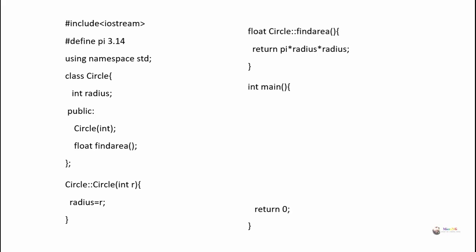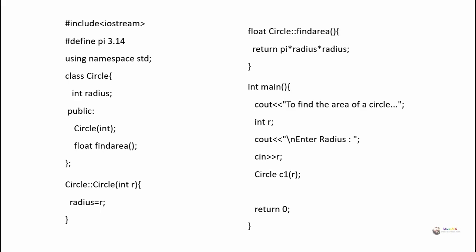In the main method we accept the value of radius from the user into variable r. Using this value we create an object c1 for the Circle class — Circle c1(r) — so radius is initialized with r. We then call c1.find_area() and display the result using cout. In this example, both the constructor Circle and the find_area method are declared inside the class and defined outside.